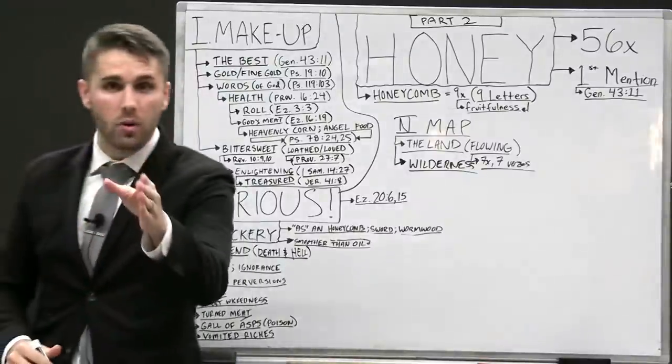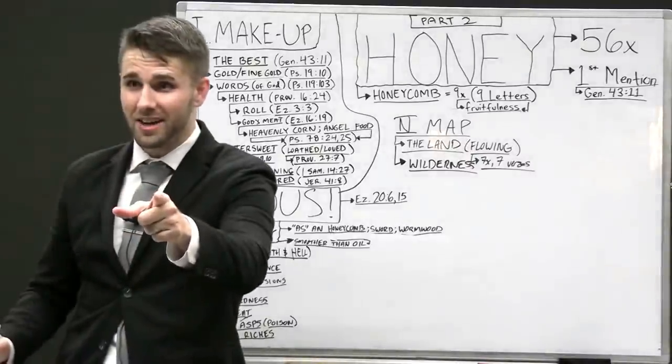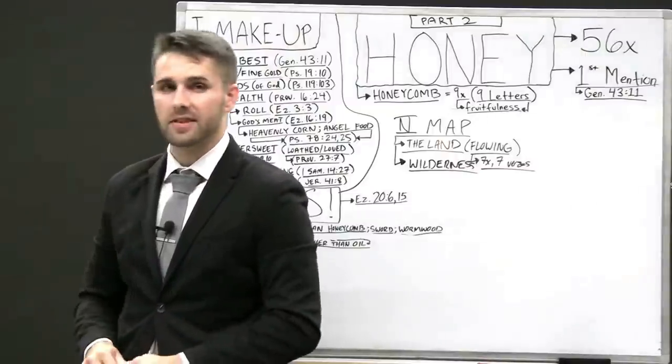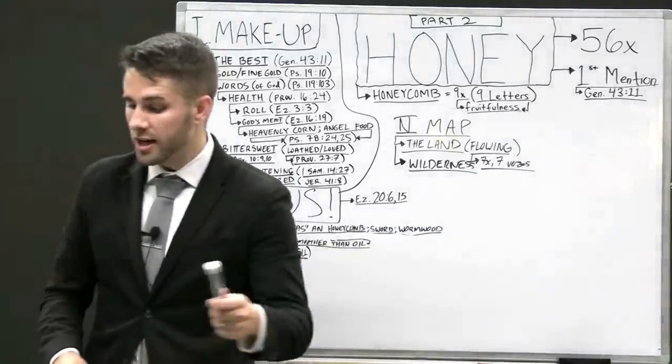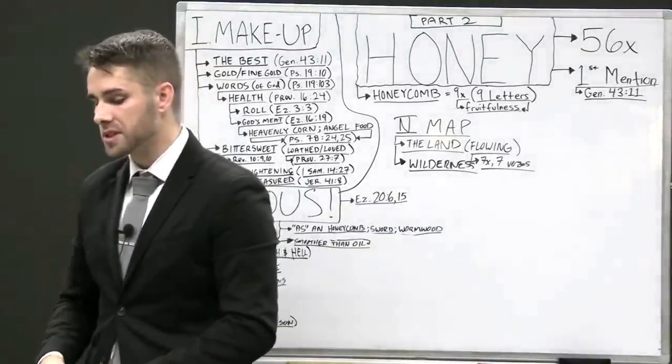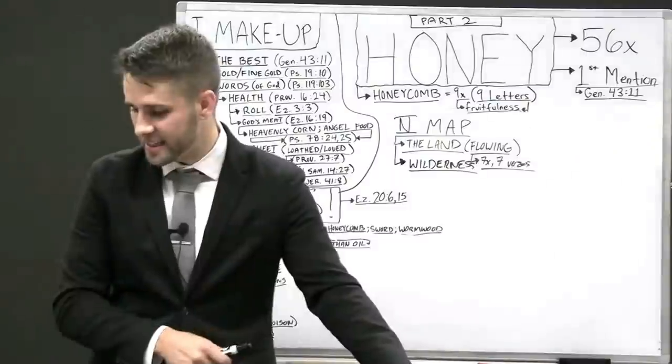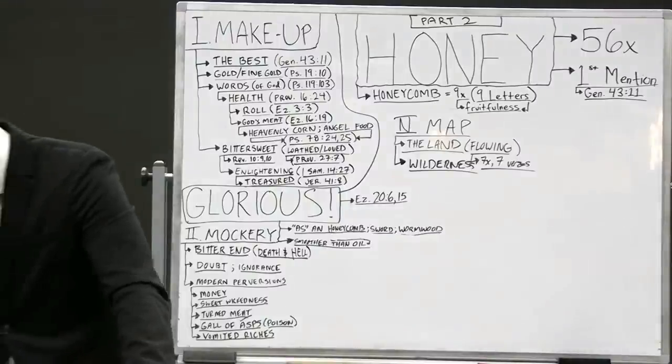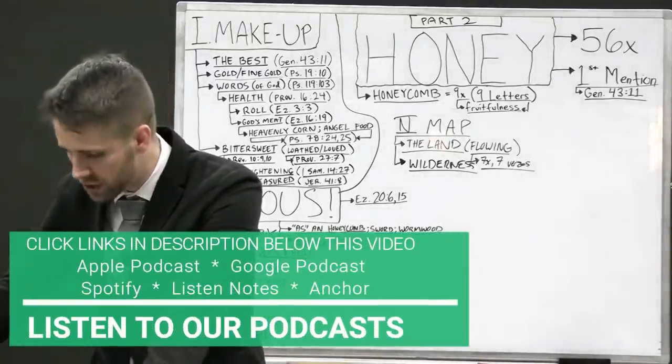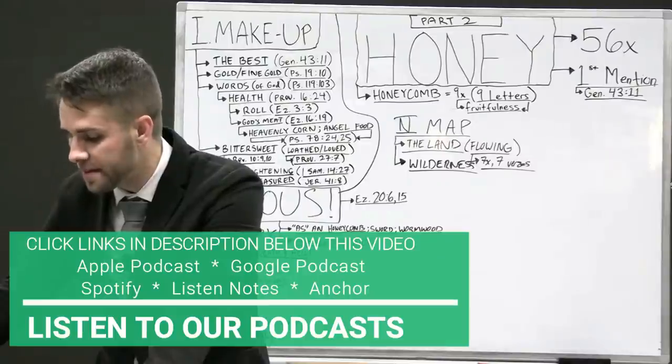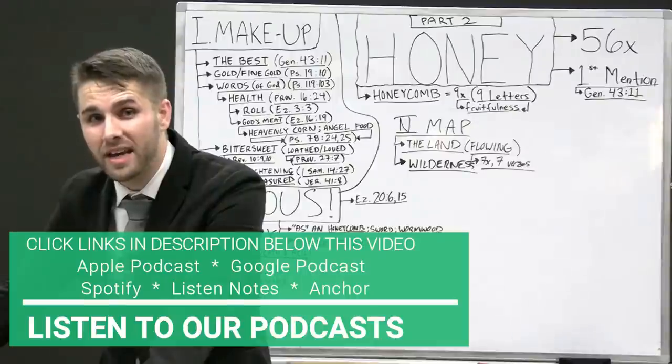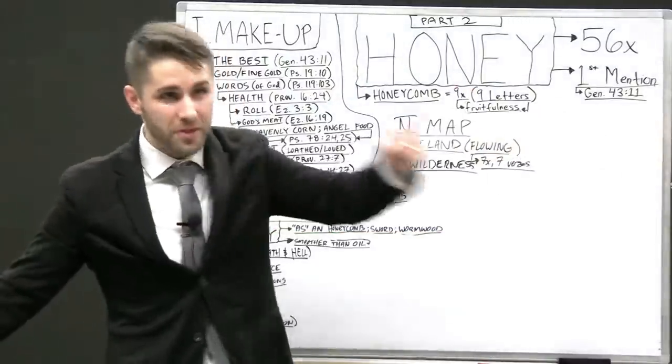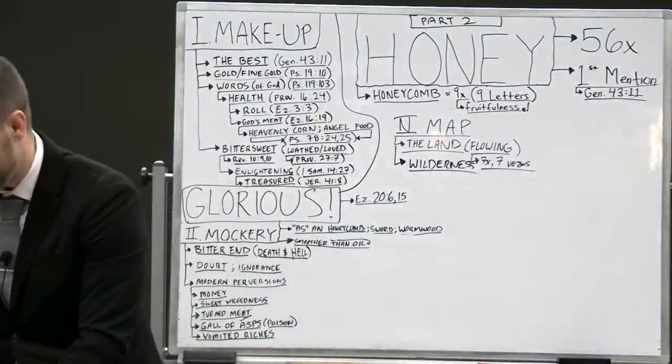Go over to Exodus 16. Let's see more about the location of the honey. Where can I get this honey? The words of God. Exodus 16, verse 4. The Bible says, Then said the Lord unto Moses, Behold, I will rain bread from heaven for you, and the people shall go out and gather a certain rate every day, that I may prove them whether they will walk in my law or no. And then look in verse 31. And the house of Israel called the name thereof manna. And it was like coriander seed, white, and the taste of it was like wafers made with honey. So another place you can find it is you can find the honey in the wilderness. The children of Israel were in the wilderness here.